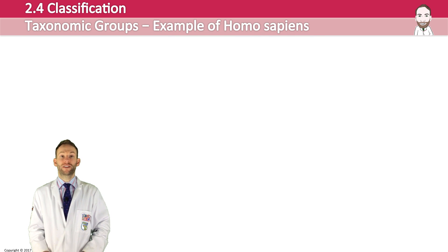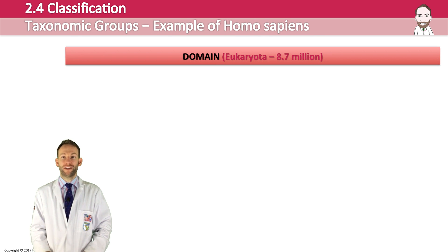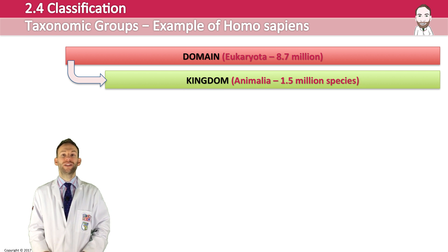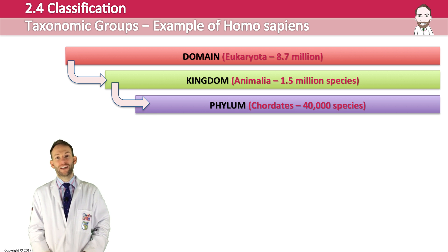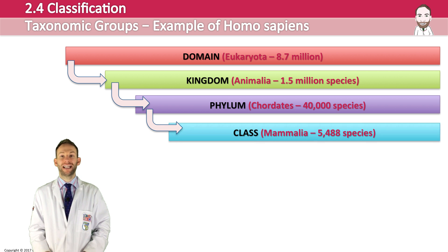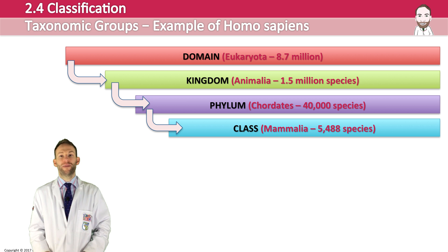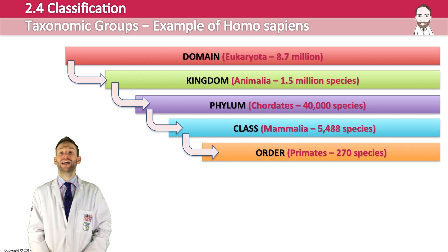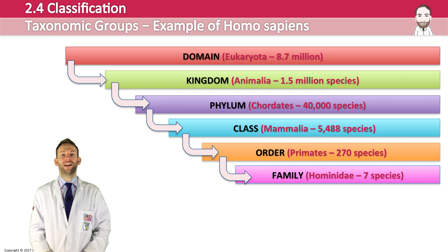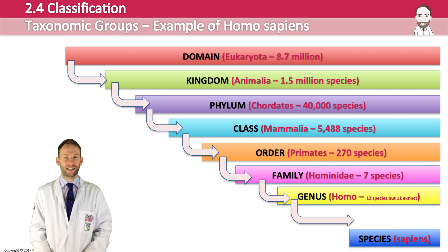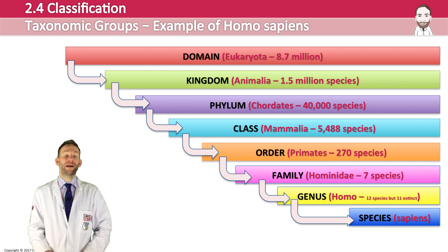For example, let's classify a human. Humans (Homo sapiens) belong to the eukaryotic domain, the animal kingdom, the phylum Chordata (basically vertebrates), the class Mammalia, the order Primates, the family Hominidae, the genus Homo, and the species sapiens.